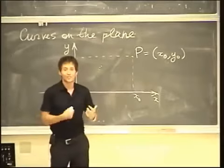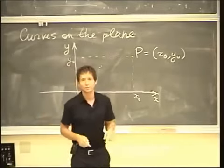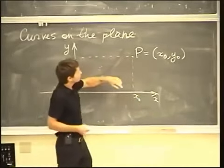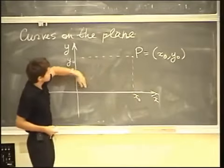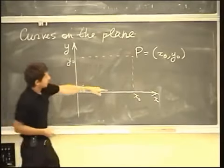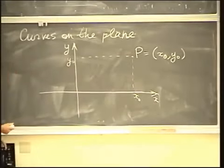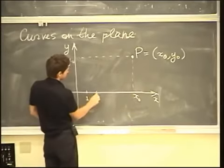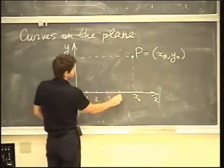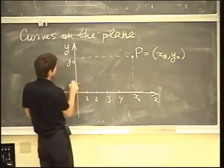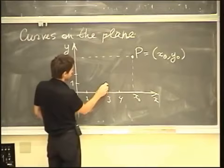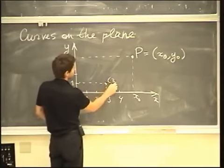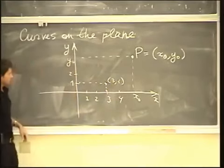Very soon we will learn other coordinate systems — other ways of representing points. For example, polar coordinates are coming up next week. But for now, we will think of points as being represented by their coordinates x0 and y0. So for instance, if you have a point with coordinates three and one, that's this point. First goes the x-coordinate, then goes the y-coordinate.